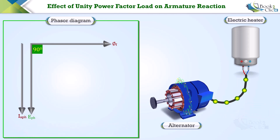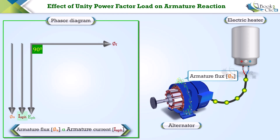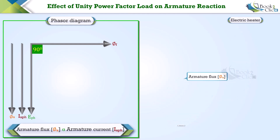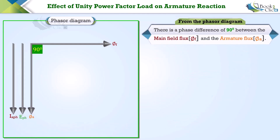So to represent i_aph in the vector diagram, we can draw a line parallel to e_ph. This armature current will set up the armature flux phi_a. We know that flux is directly proportional to current, hence we can draw a line parallel to i_aph to represent the armature flux. From the phasor diagram, it is evident that there is a phase difference of 90 degrees between the main field flux and the armature flux.